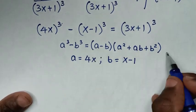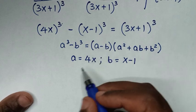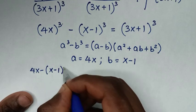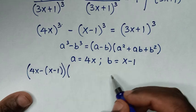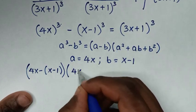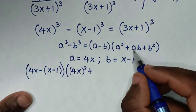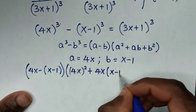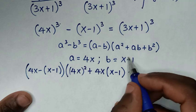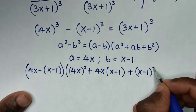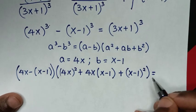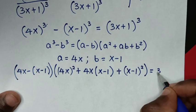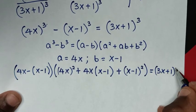Applying the difference of cubes formula: (a minus b) is (4x minus (x-1)), then multiplied by the bracket containing a² which is (4x)², plus ab which is 4x(x-1), plus b² which is (x-1)², and this equals (3x+1)³.